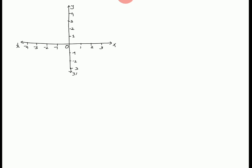Now we can say that this is a point P. The X coordinate distance is 2, and the Y coordinate distance is 3. So point P has coordinates (2, 3).